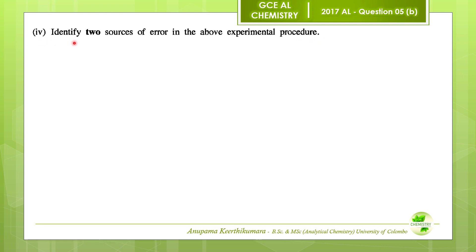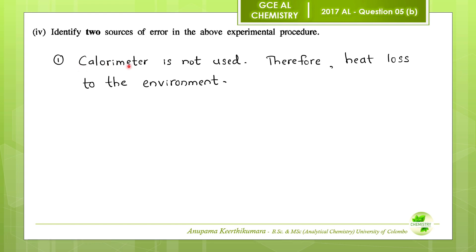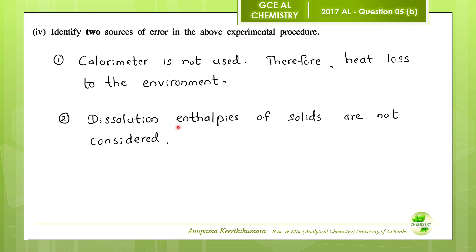Question number 4: identify two sources of error in this experimental procedure. First, a calorimeter was not used, so there is definite heat loss to the environment. Second, during these reactions, in addition to the neutralization between the acidic and basic species, there is another enthalpy change involved — the dissolution of the solids. Therefore, the dissolution enthalpies of the solids are not considered during the experiment.